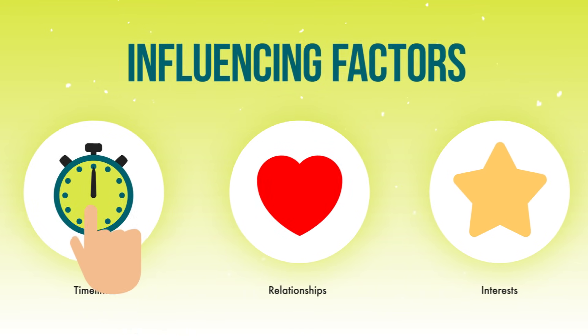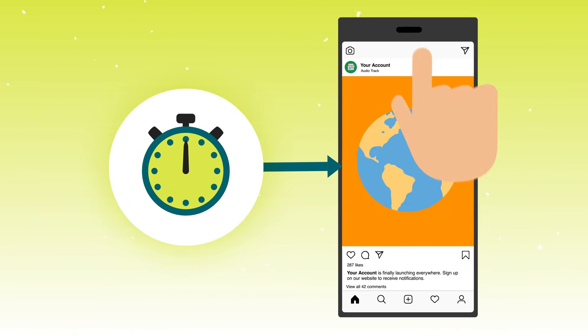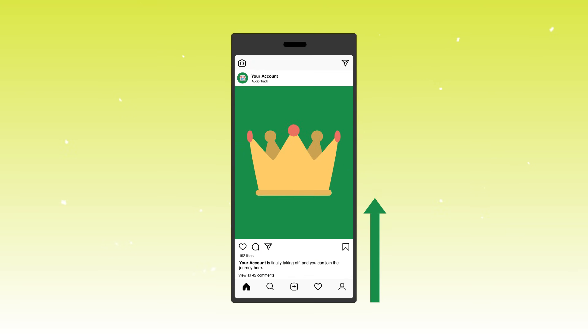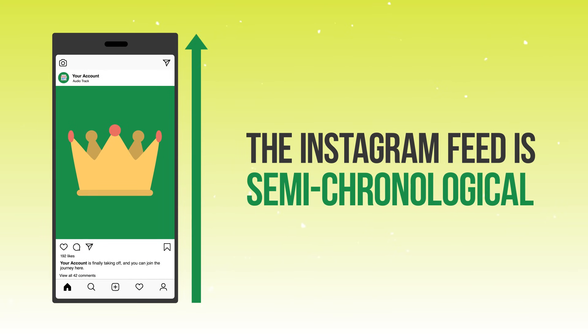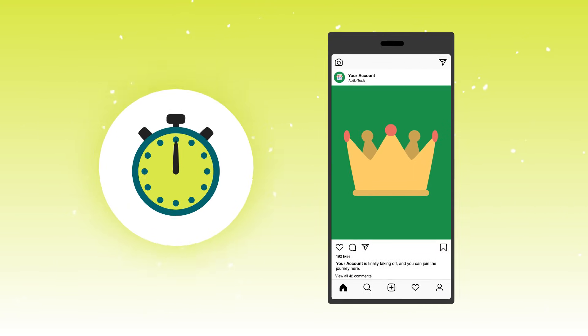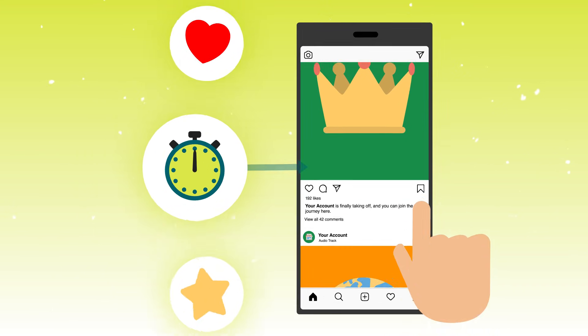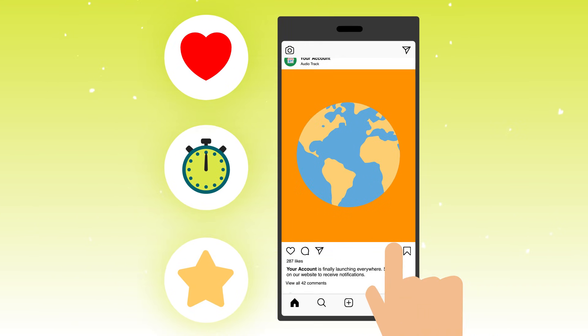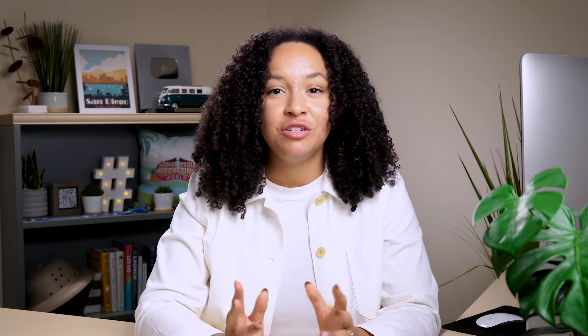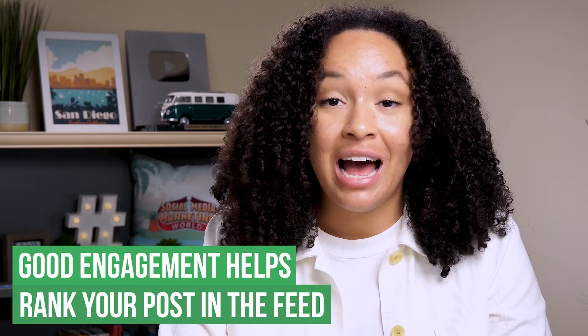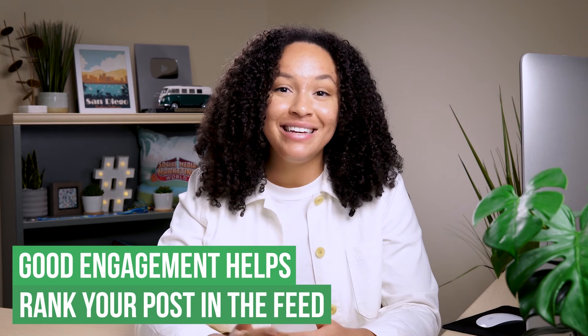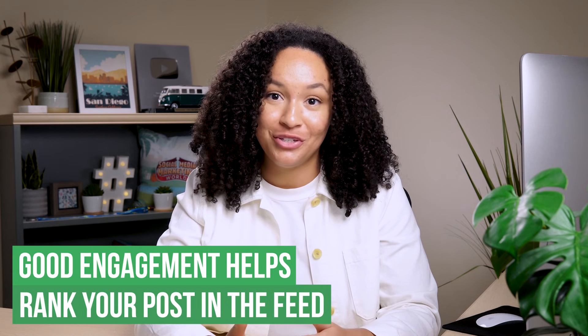When it comes to timeliness, this used to be the chronological feed which was all based on when you were posting your content. But now the algorithms are semi-chronological, meaning that the content at the top of your feed most likely was posted sooner — that's the timeliness factor — but interest and relationships also play into what's at the top of your feed. To boost this timeliness factor, the more engagement your content gets after you post it, the more likely Instagram is to push it out to more users.